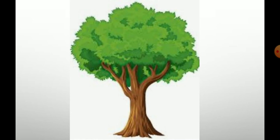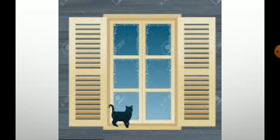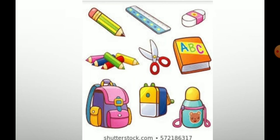Tree is one example which has life but still comes under neuter gender. Window, chair, table, pencil, scale, eraser, colour pencils, scissor, book, bag, tiffin, water bottle — all these come under neuter gender.